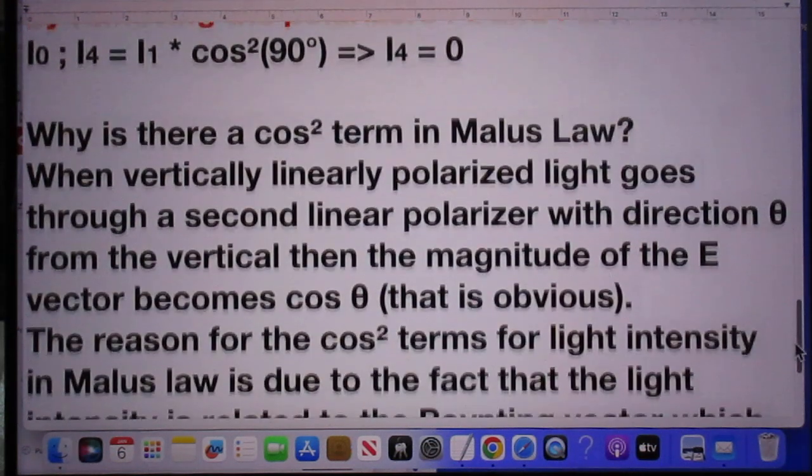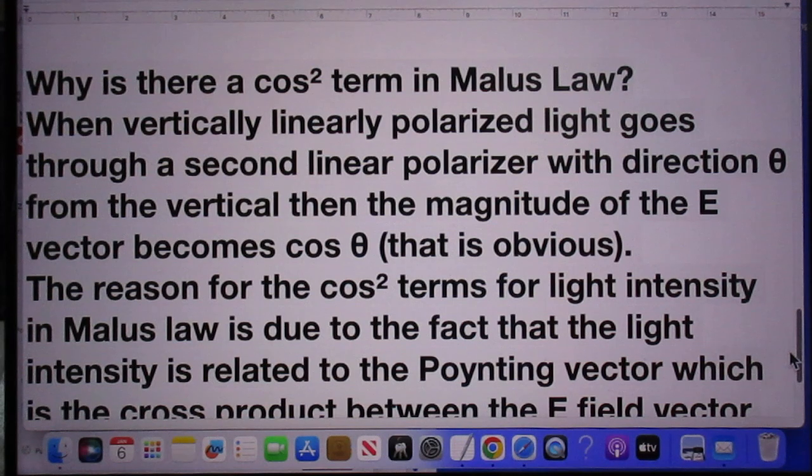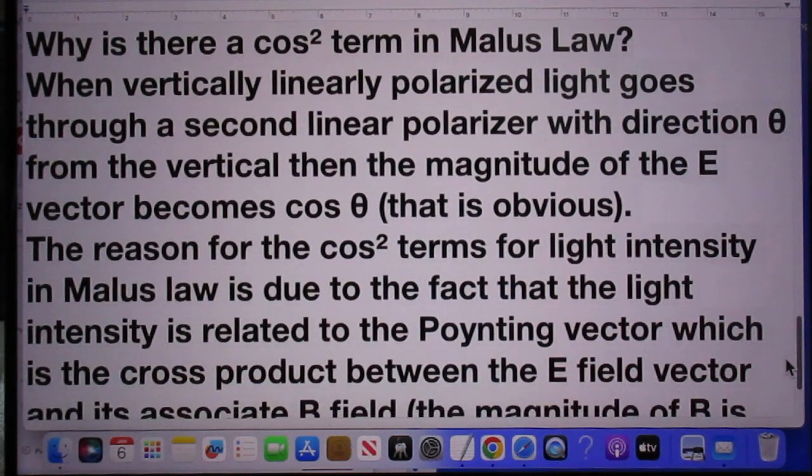Why is there a cosine squared term in Malus's law? When vertically linearly polarized light goes through a second linear polarizer with direction theta from the vertical, then the magnitude of the E vector becomes cosine theta. That is rather obvious—make a sketch.